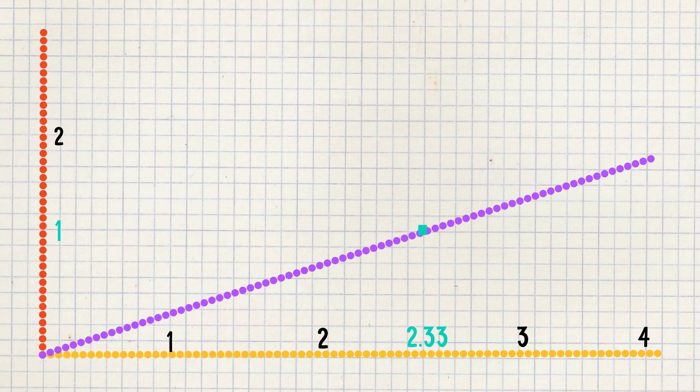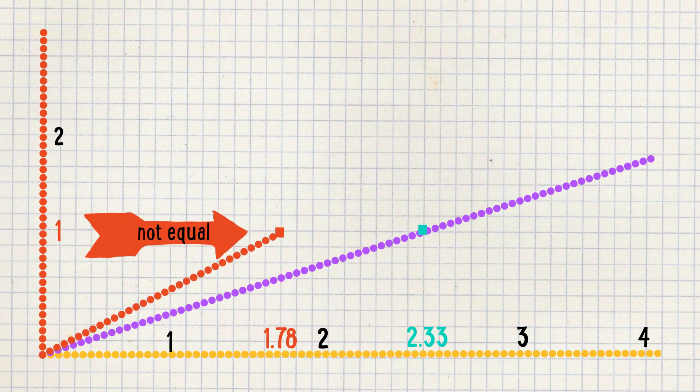Another way to look at it: if you were to place 2.33 to 1 on a graph, it would not be on the same line as 1.78 to 1. But if you watch this movie at your local movie theater, you won't notice the black bars at the top and bottom, because they change the ratio of the screen to match the ratio the movie was shot in.